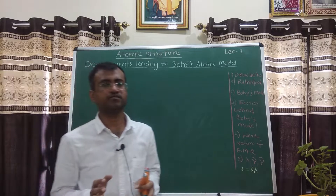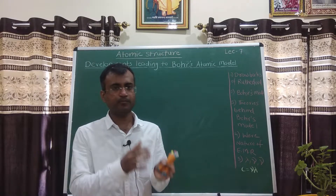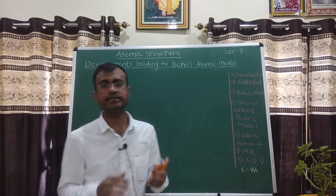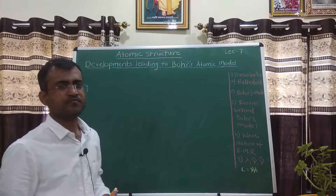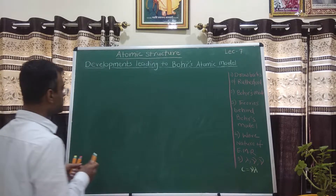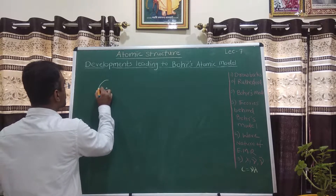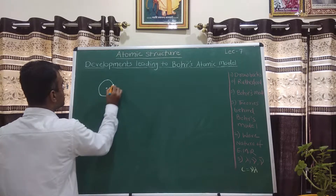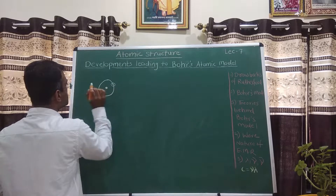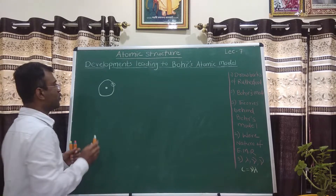As of now, till our 6th lecture, we have discussed several atomic models and in the previous discussion, we studied about Rutherford's atomic model and its drawbacks. Rutherford's atomic model was like a planet, hence it is also called the planetary model. In this model, he explained that electrons are revolving around the central positively charged nucleus.